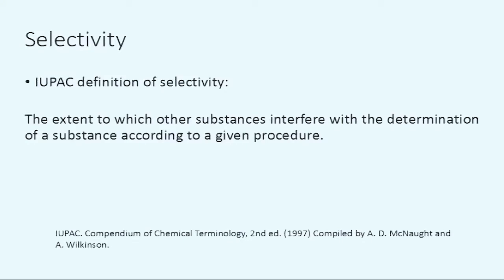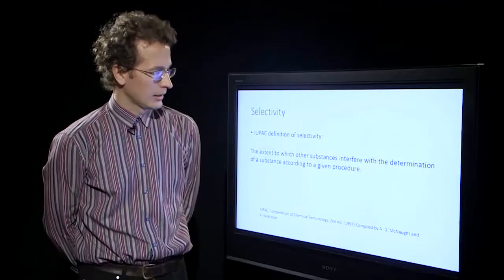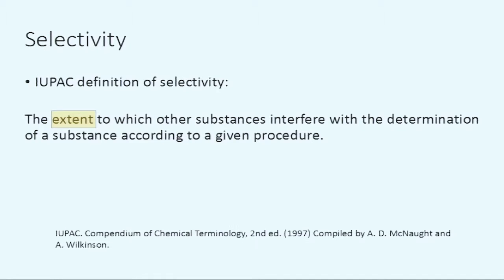Selectivity, as defined by the International Union of Pure and Applied Chemistry, IUPAC, is the extent to which other substances interfere with the determination of a substance according to a given procedure. In this definition, I'd like to stress two terms. First is 'extent,' which shows that selectivity is not a yes-or-no decision — it has a graduation. The method can be more or less selective. If the method is 100% selective, there is a specific term for this: specificity.